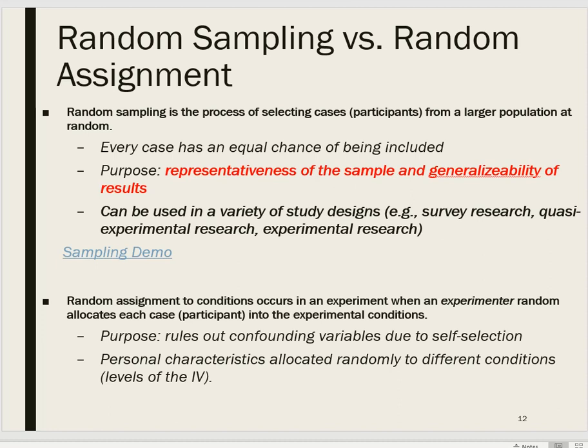There may be some deviation in the sample characteristics compared to the population characteristics, but if the sample itself is representative, it makes it more likely that the results will be generalizable back to the population. So random sampling is a method for selecting participants in a way that makes it likely the sample is representative, which makes it likely that we can generalize results back to the population.